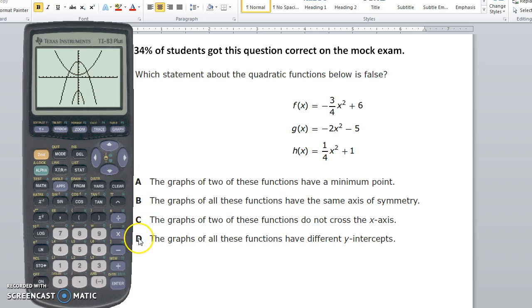The graphs of all these functions have the same axis of symmetry. That's true, because the axis of symmetry for all three graphs is the y-axis. They all reflect across the y-axis.